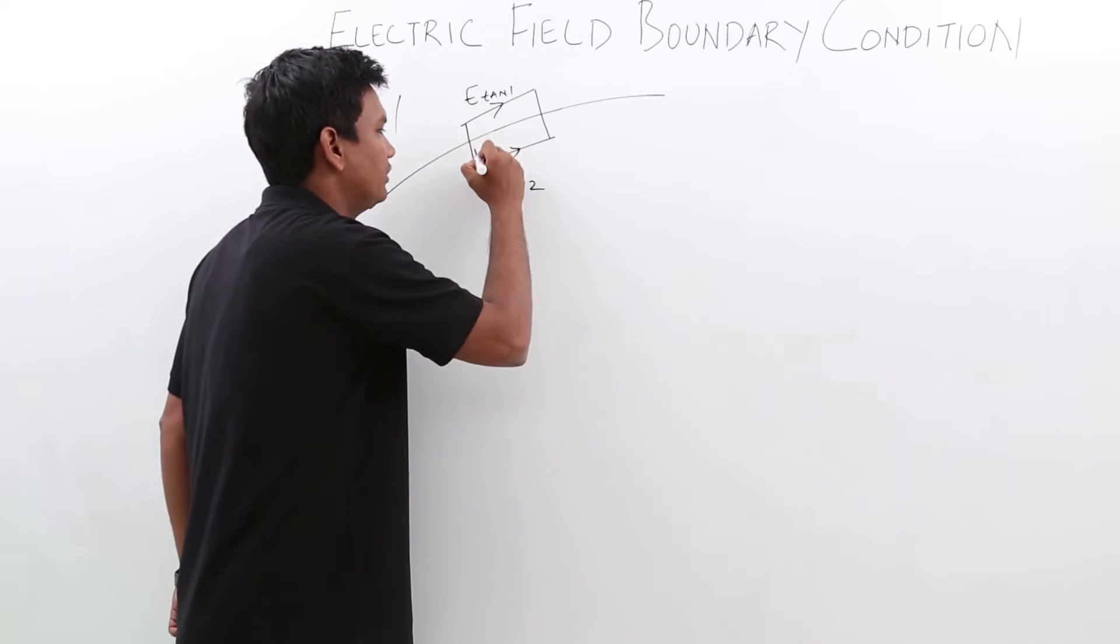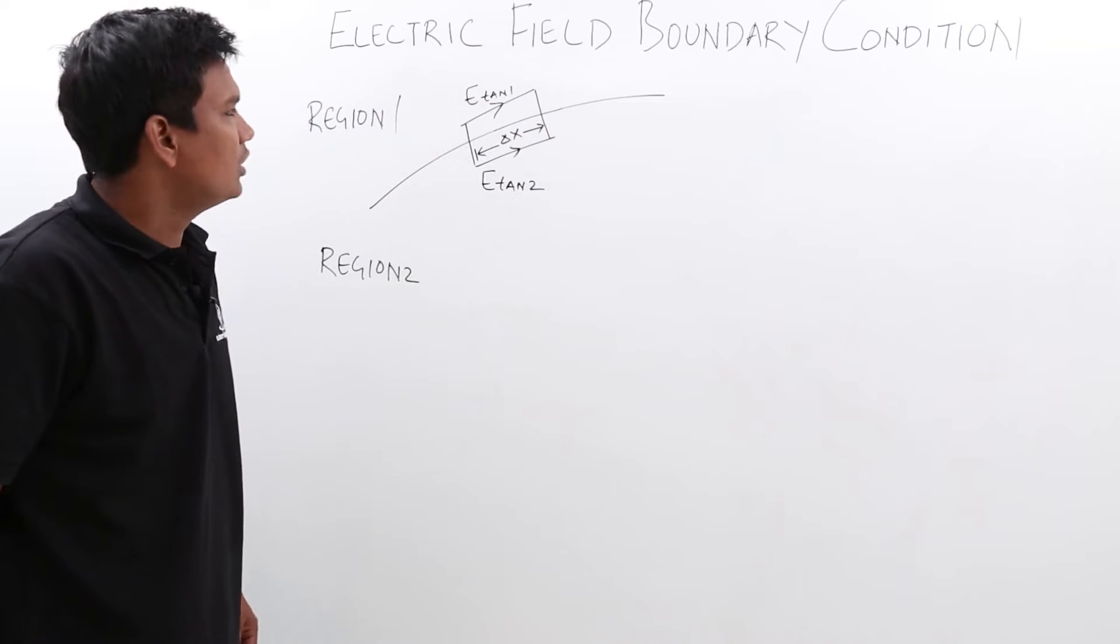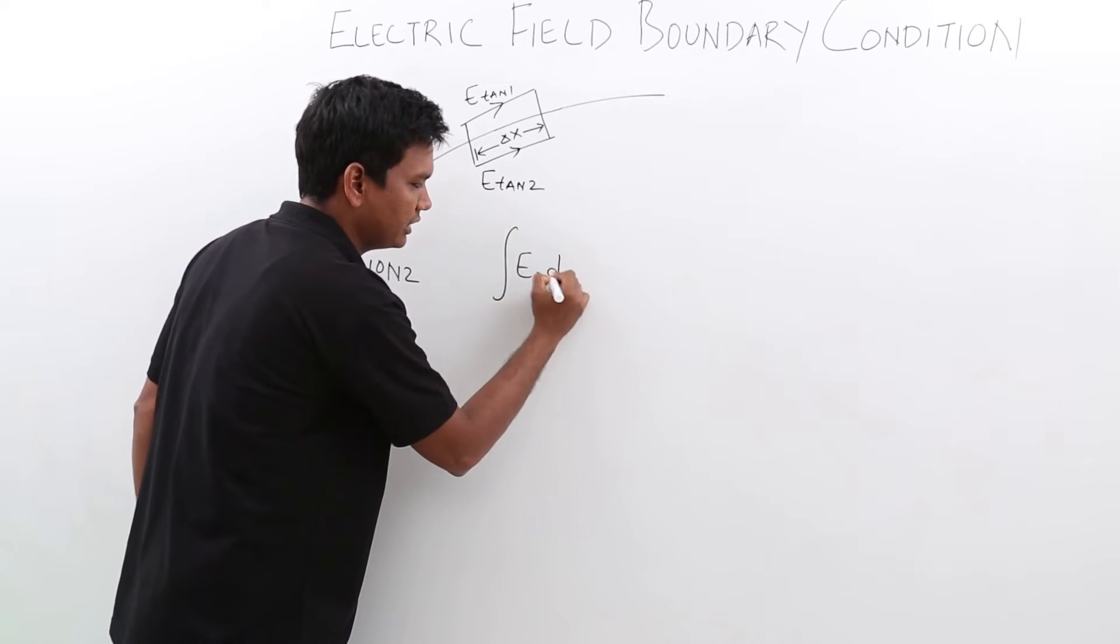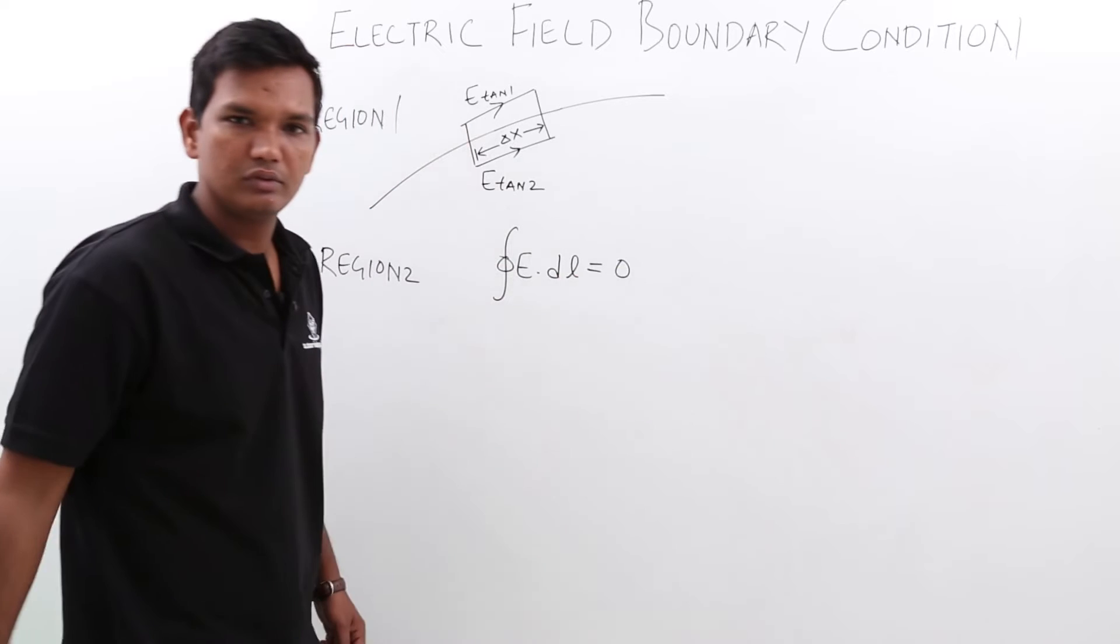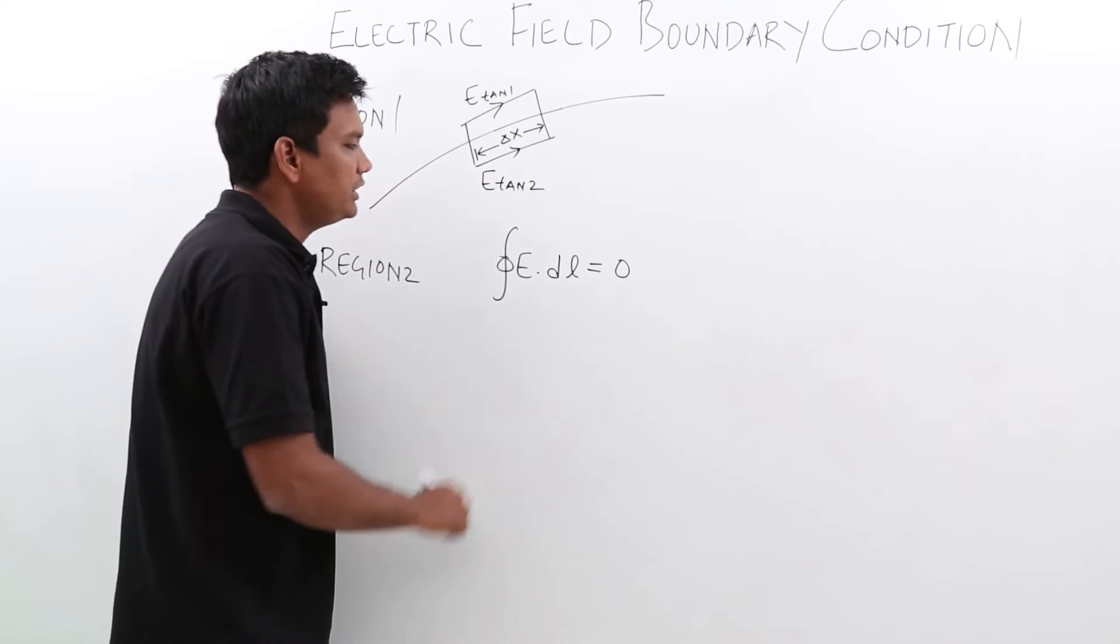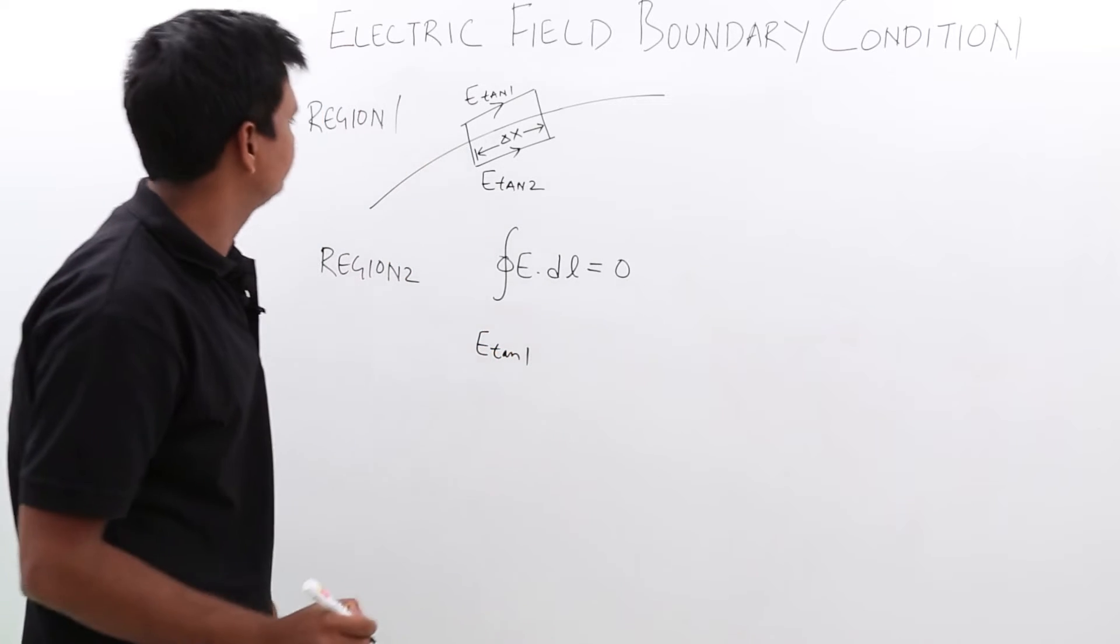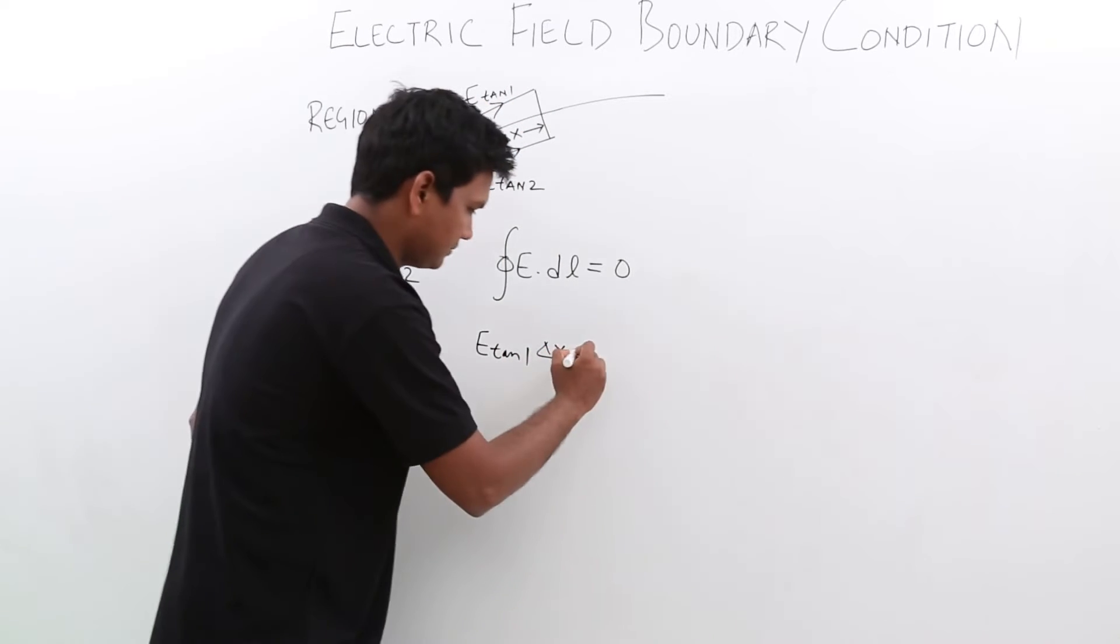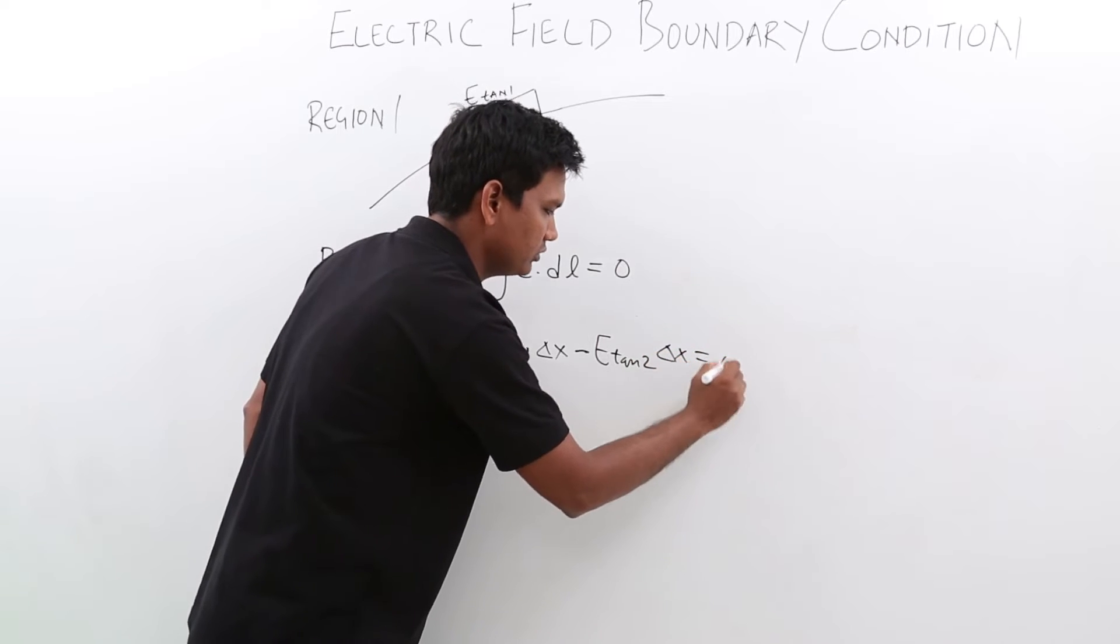Let me assume the length of this as delta x. Now we already know that from the potential, E dot dl over a closed path will be always equal to 0. So in that case, we will apply this formula over here. E dot dl will have E tan 1, the length here delta x minus E tan 2 delta x would be equal to 0.